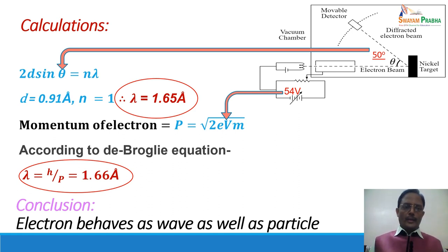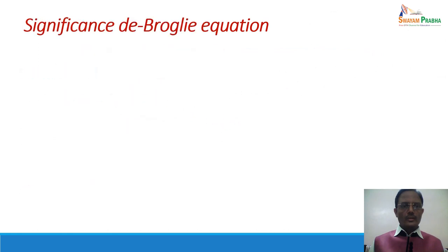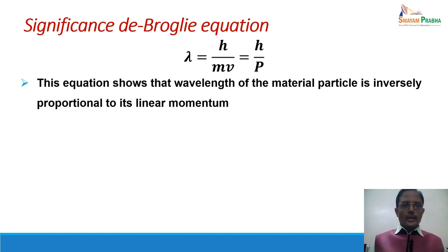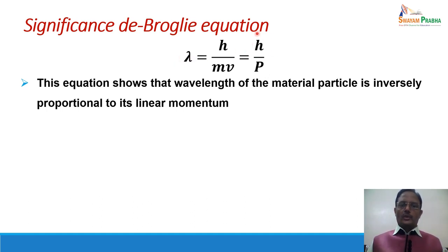The significance of the de Broglie equation λ = h/mv = h/p is that the wavelength of the material particle is inversely proportional to linear momentum. When p increases, λ decreases. H is Planck's constant, so it remains constant, giving an inverse proportion between λ and p.